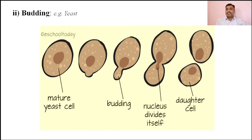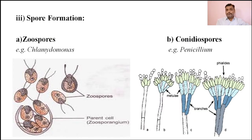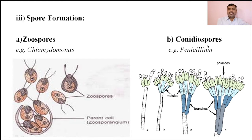The third type of asexual reproduction is known as spore formation. This is a special kind of process in which some plants produce asexual spores. Asexual spores are not involved in sexual reproduction. On the basis of production of these asexual spores, there are two different types: zoospores and conidiospores.